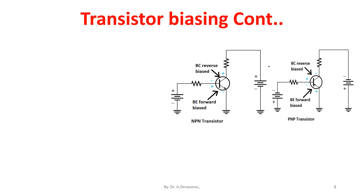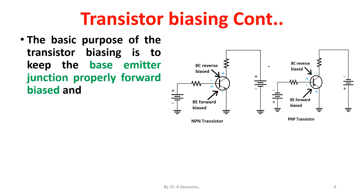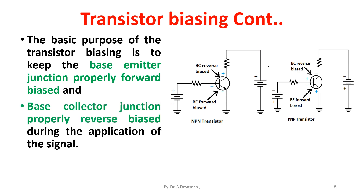The basic purpose of transistor biasing is to keep the base-emitter junction properly forward biased and the collector-base junction properly reverse biased during the application of the signal.